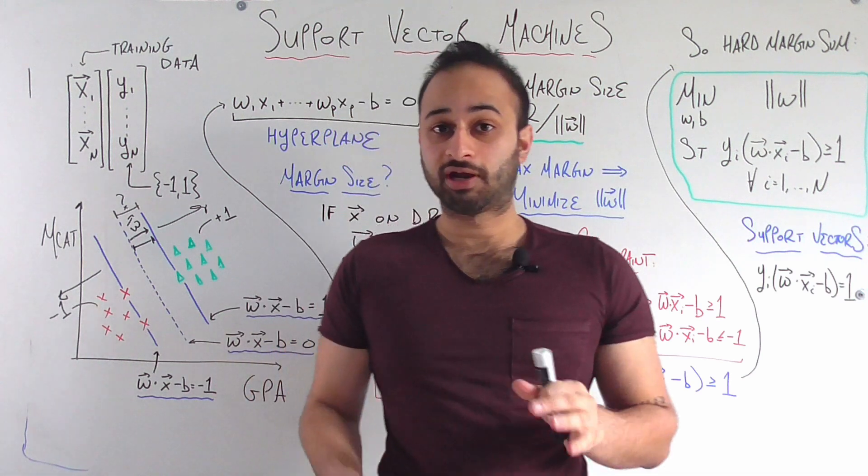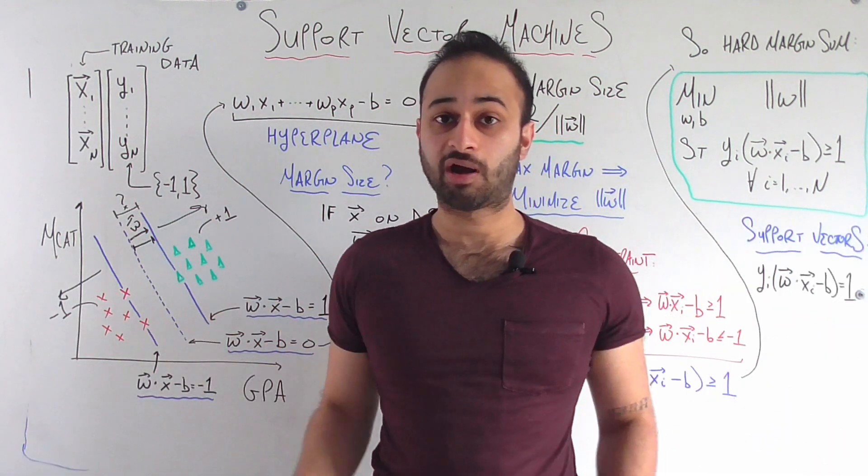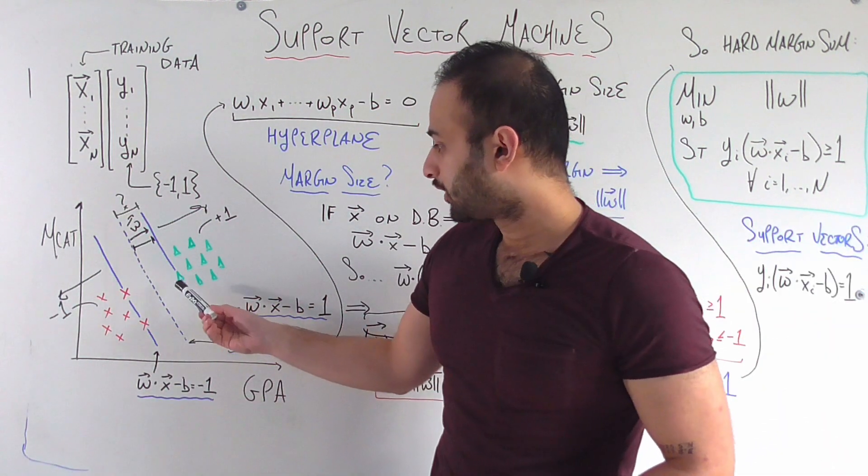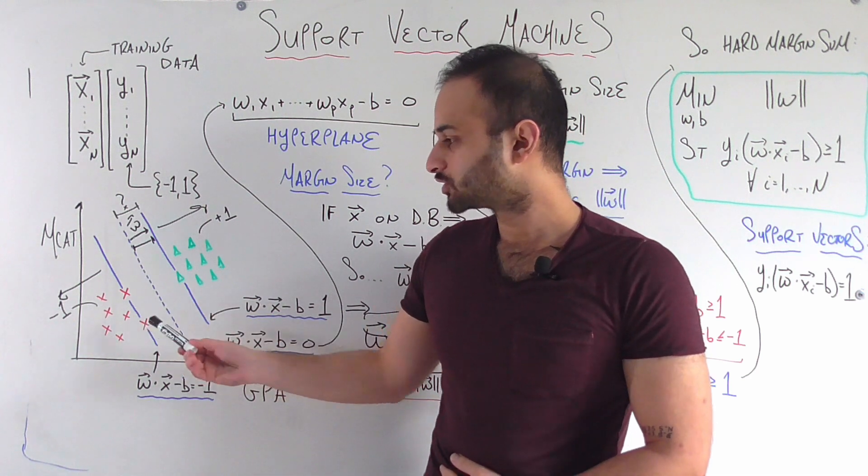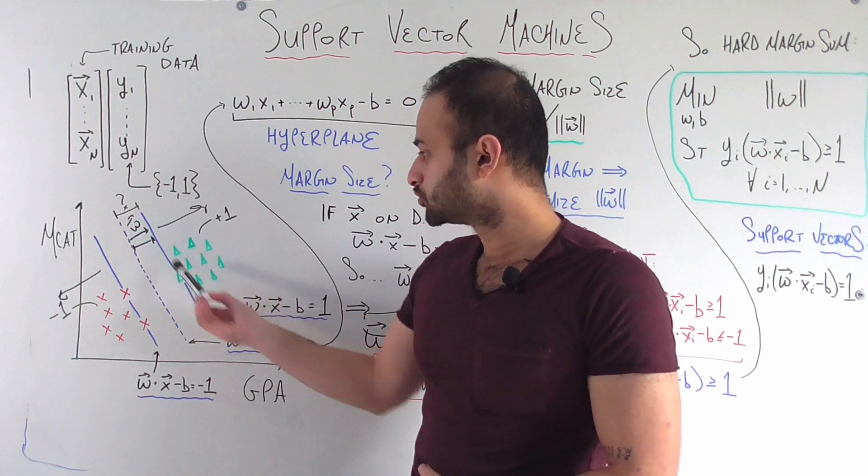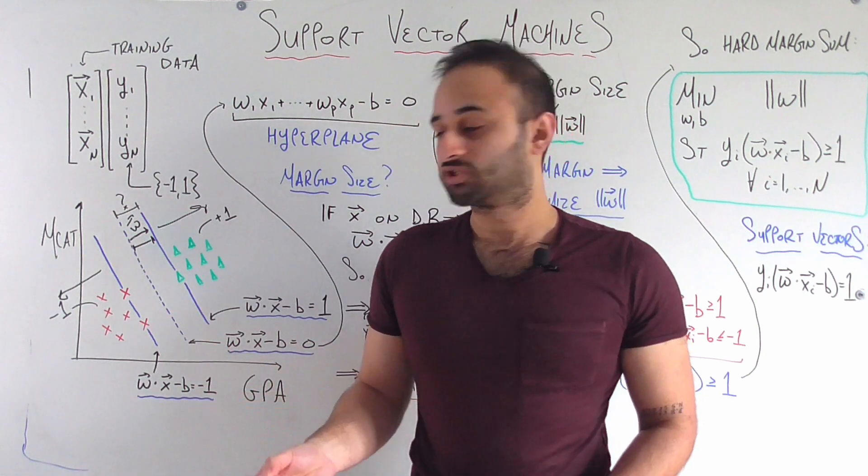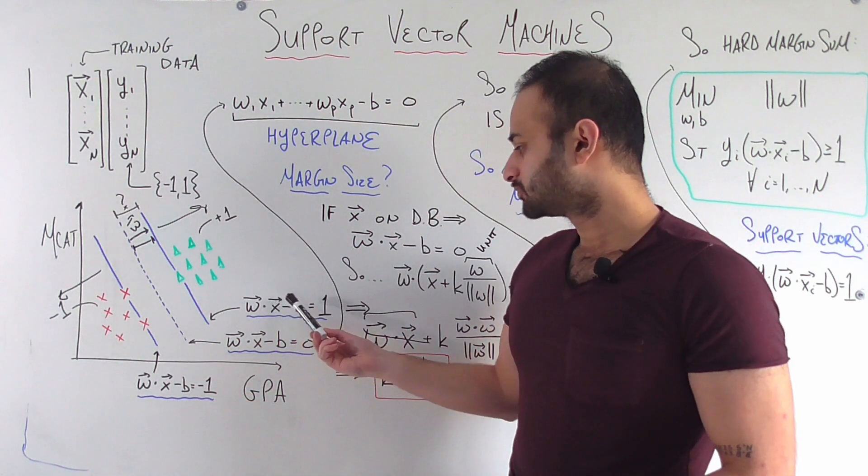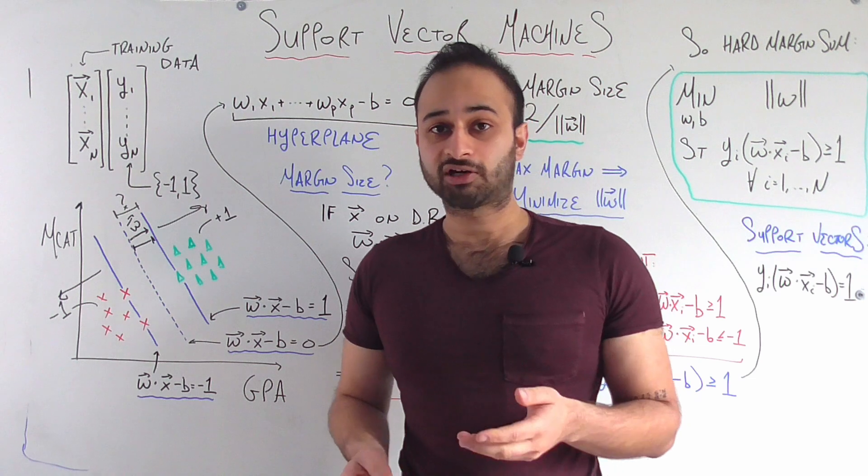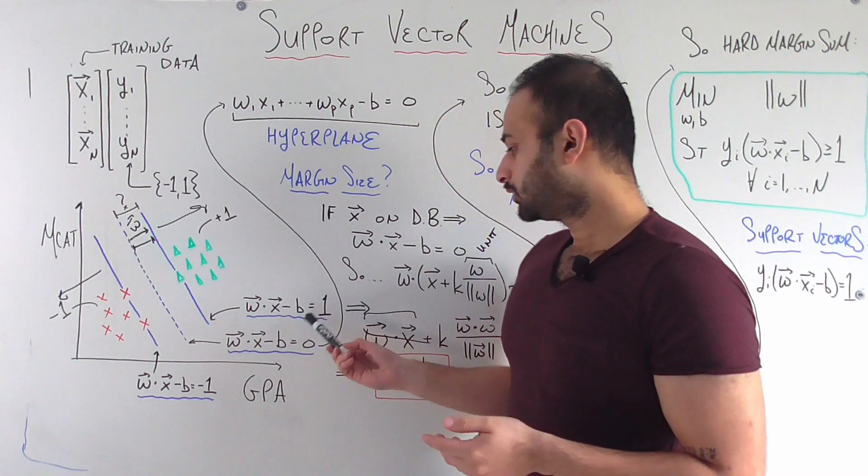The support vectors, you can actually now, you have all the foundation to figure out mathematically what they are. The support vector would be this green triangle and these two red x's, who lie exactly on these two solid blue lines, which means that w times x minus b, x being any of those support vectors, is either equal to 1 or negative 1. 1 if it's in the positive class and negative 1 if it's in the negative class.